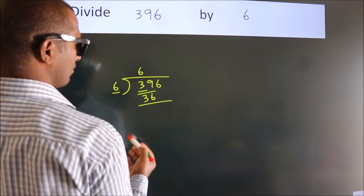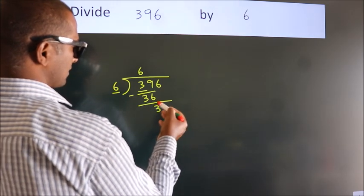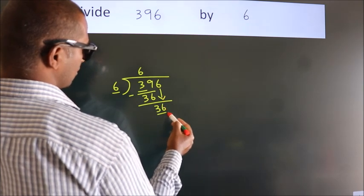Now, we should subtract, we get 3. After this, bring down the beside number. So, 6 down. So, 36.